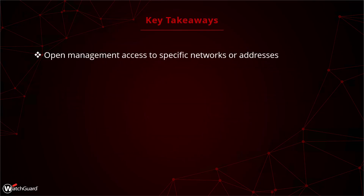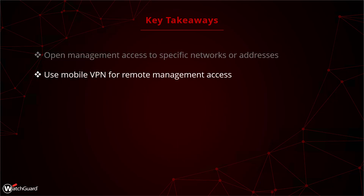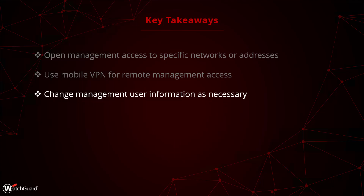To wrap things up: remember you should only open management access to specific addresses or networks, not the entire internet. A better option would be to use a mobile VPN — more secure, additional authentication, and the flexibility to connect from wherever you want without having to update management policies with individual IP addresses. And lastly, change the management user information regularly, set up a schedule that you adhere to, and update it when somebody leaves the company. If you follow all of these recommendations, your remote management access should be much more secure. Please check out our knowledge base article and documentation on these topics, which you can find using WatchGuard Technical Search.